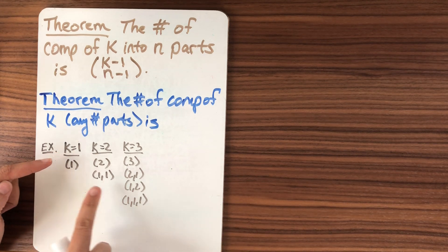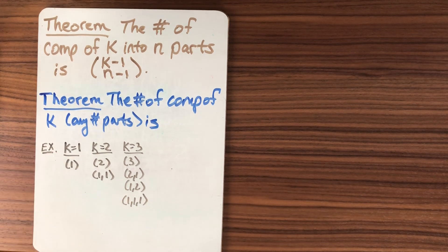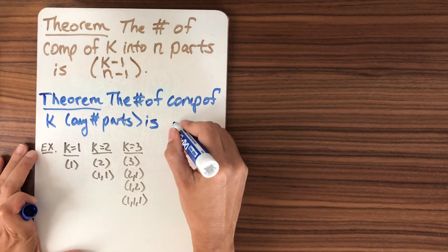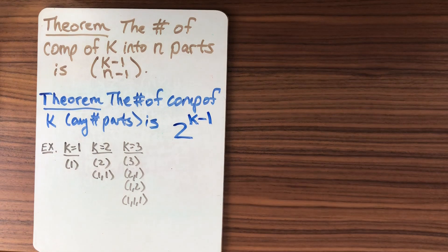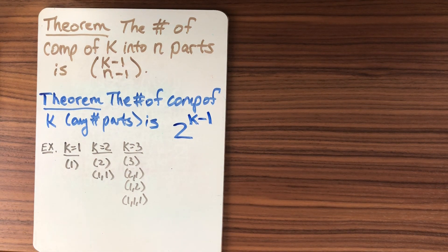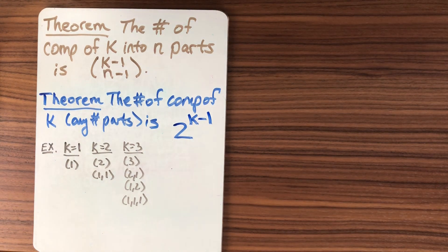Well, two to the zero, two to the one, two to the two. So I'm going to state that it's going to be two to the k minus one. All right, there's our nicely stated conjecture. Let's prove it.